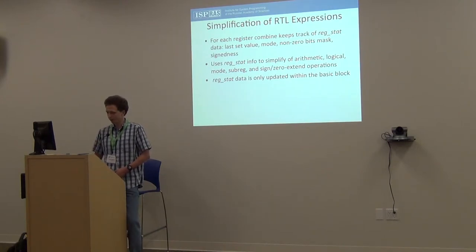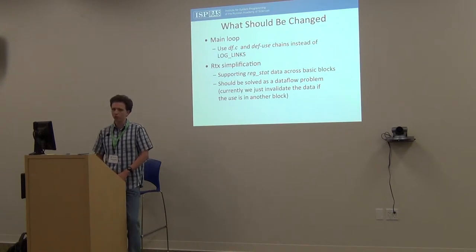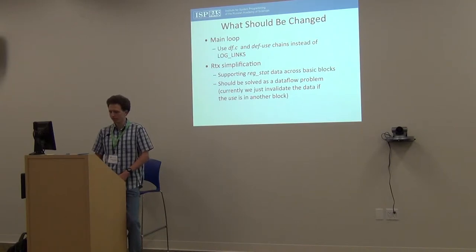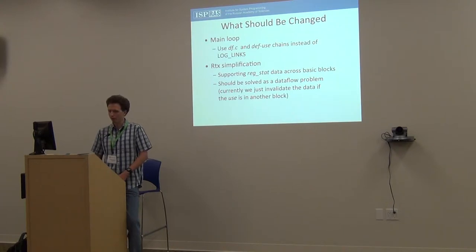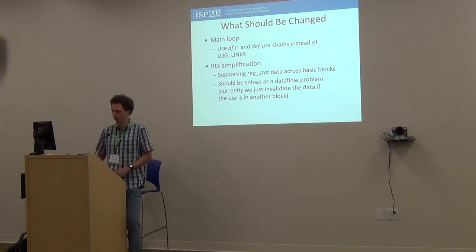This data is used to simplify different expressions at RTL level, but it's only updated within a basic block. So if we want to change combine to be inter-block, the first thing we should change is the main loop and make it use data flow analysis instead of log links. Then we should update RTL simplification so this RTX state data is supported across basic blocks. Currently, we just invalidate the data if we combine instructions from different basic blocks — it should be solved as a data flow problem.